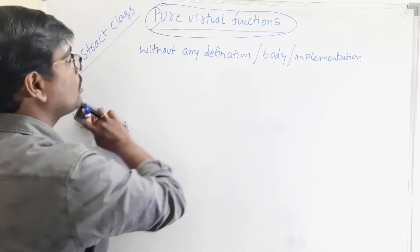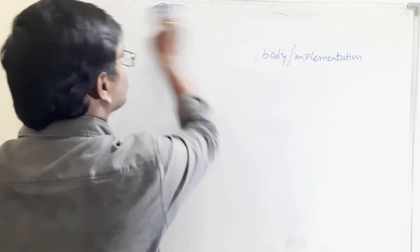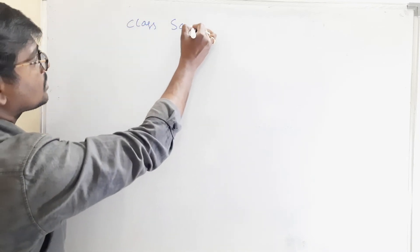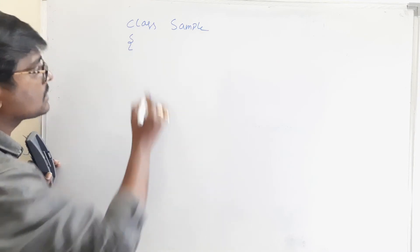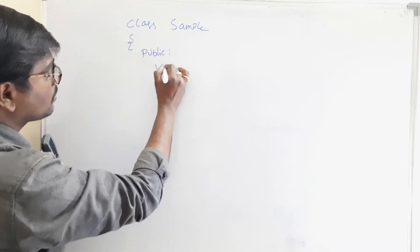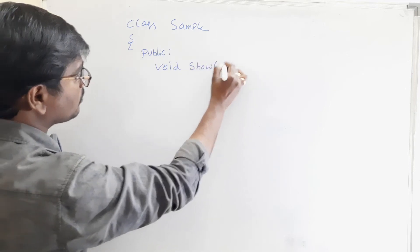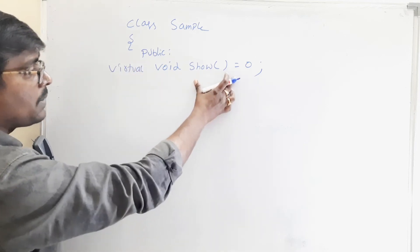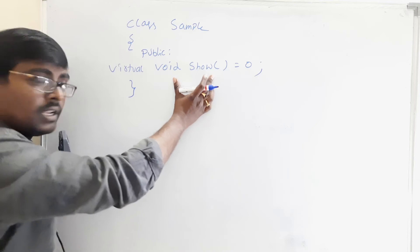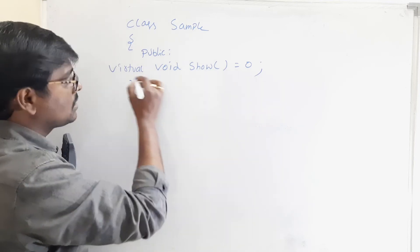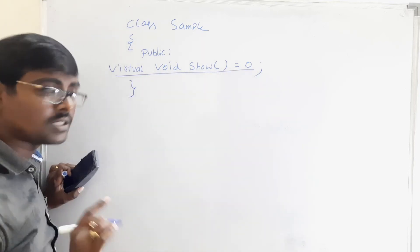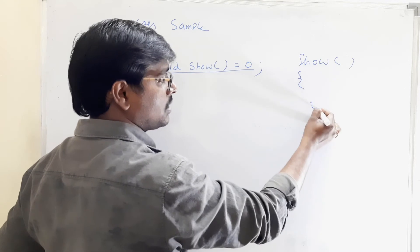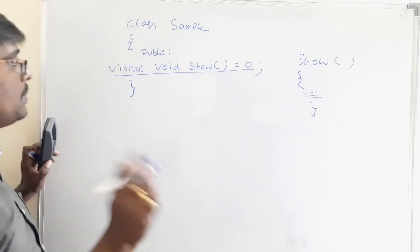Let's discuss one example. We have class sample with public access. We declare: virtual void show() = 0. This is a method without any definition — this is called a pure virtual function. Normally, show would have some implementation, but here there is no implementation, making it a pure virtual function.